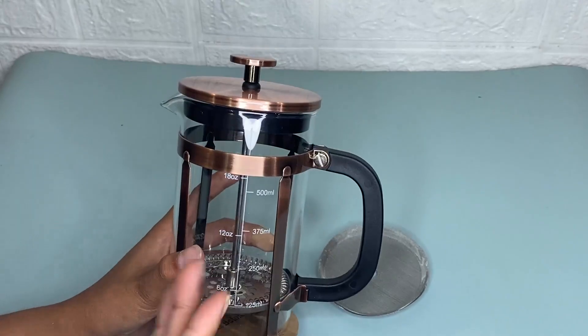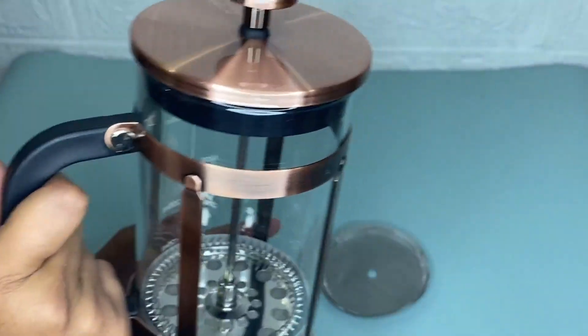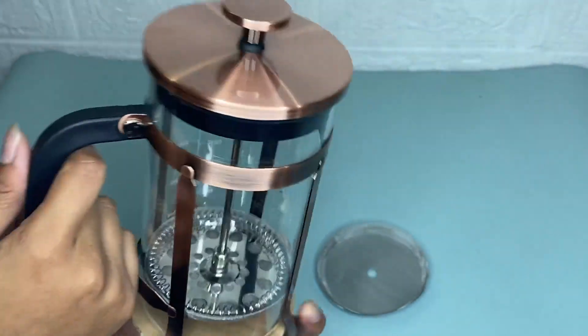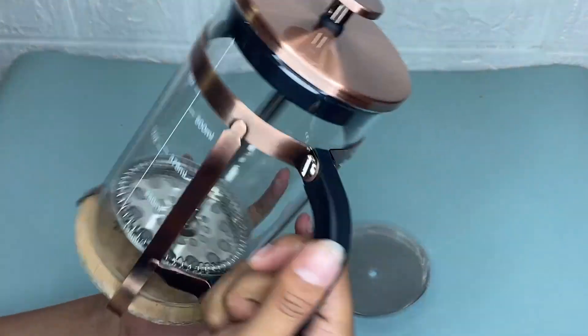This perforated plate filters out big coffee grounds, and it has an 80 mesh filter that filters out tiny coffee grounds.